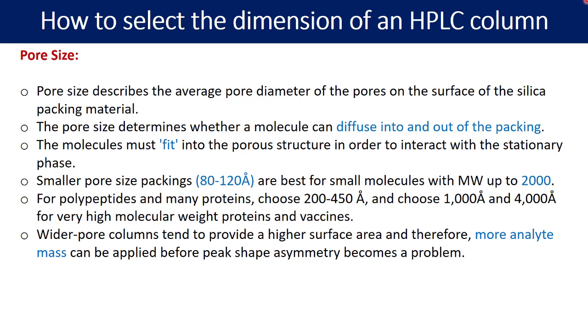Now the last point is very important. The wider pore columns tend to provide a higher surface area and therefore more analyte mass can be applied before peak shape asymmetry becomes a problem. That means the bigger is the pore size, bigger is going to be your surface area, and hence more amount of analyte can be accommodated by the given stationary phase. So you will not have the asymmetric peaks if the surface area is the constraint.